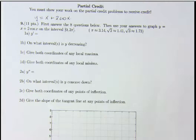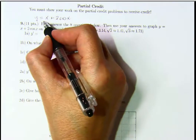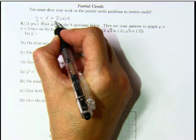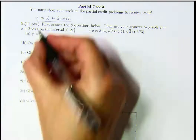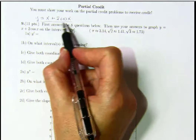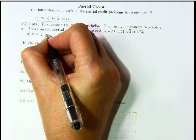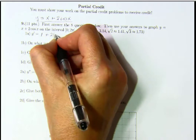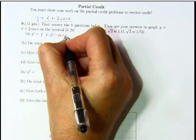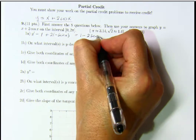Here we have to graph a function, and the first step is to calculate the derivative. So y equals x plus 2 times cosine of x is the equation we're going to graph. The derivative of the function x plus 2 times cosine of x is 1 plus 2 times the derivative of cosine, which is minus sine of x. This is equal to 1 minus 2 times sine of x.